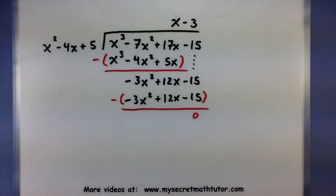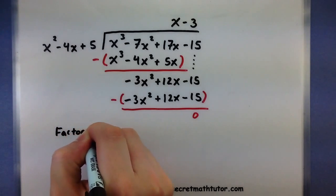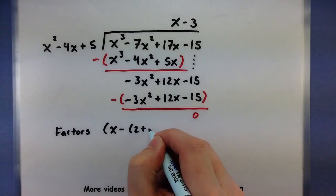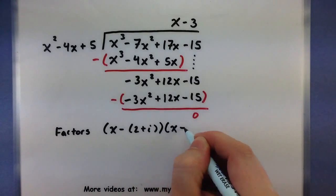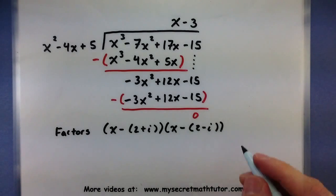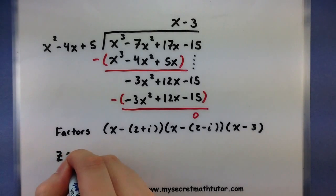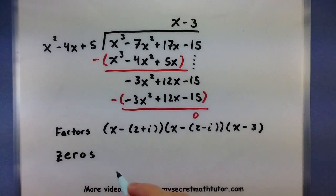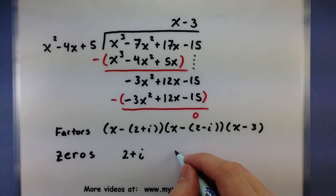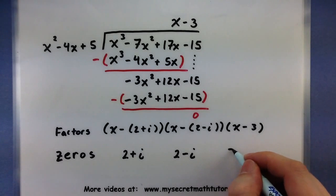Let's finish by listing out the factors and corresponding zeros. The factors are (x minus (2 plus i)), (x minus (2 minus i)) — those are the two complex ones — and we just found (x minus 3). The corresponding zeros are 2 plus i, 2 minus i, and 3.